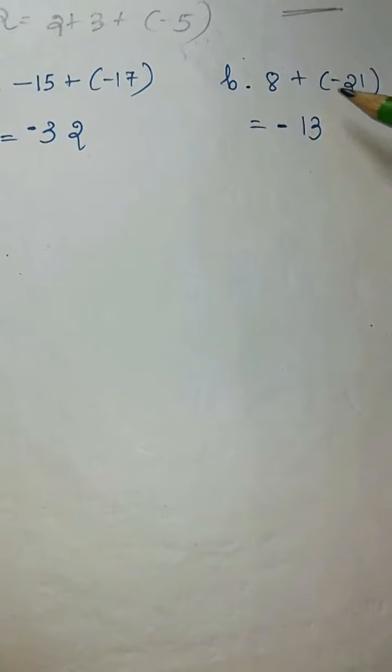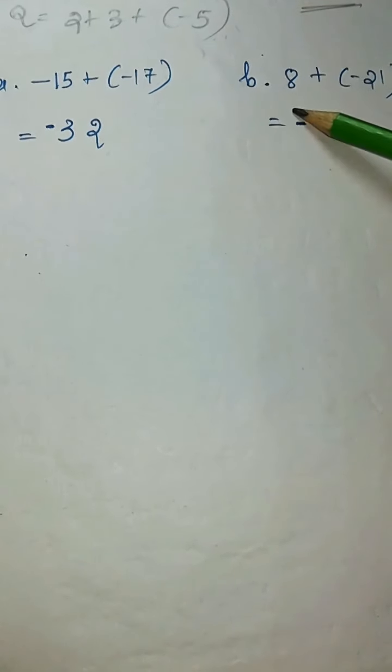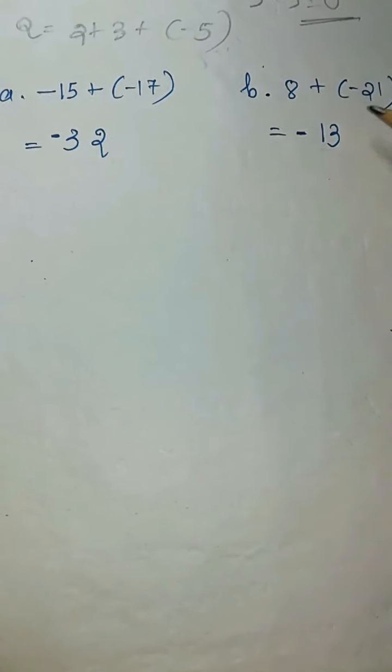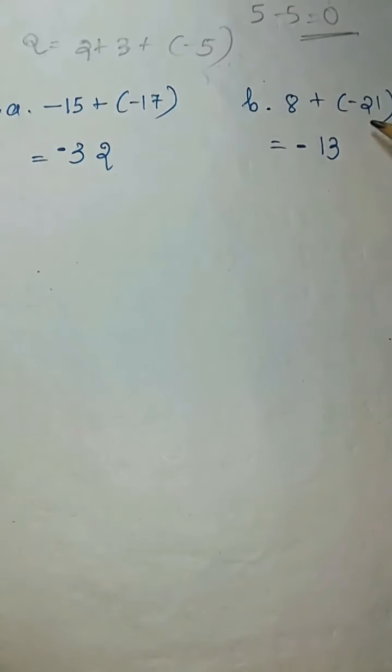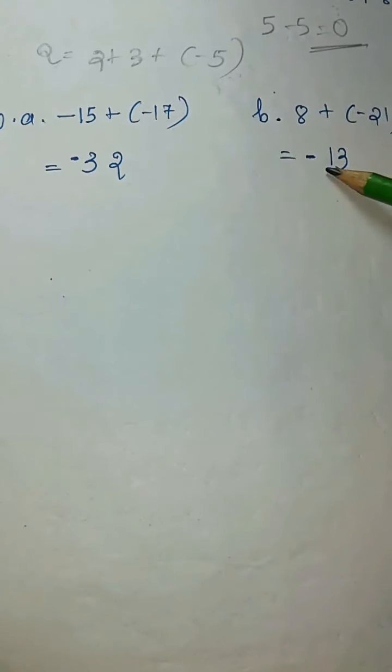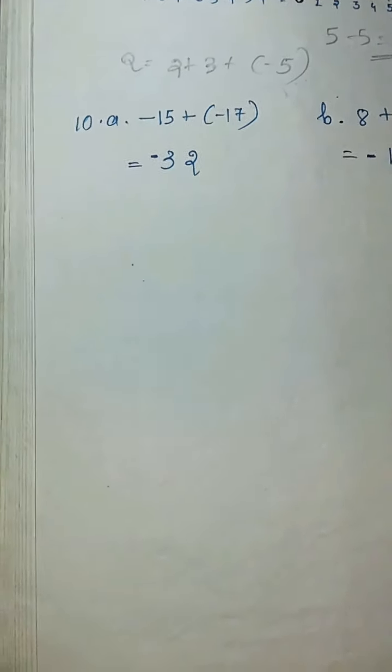Then part B is 8 plus, in brackets, minus 21. Here, one is positive integer, another one is negative integer. So here you subtract. And here, this number is bigger one. Here minus symbol is there, so here you put one minus symbol. Like this, you complete other numbers.